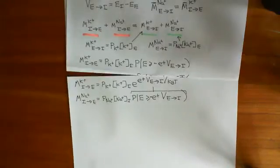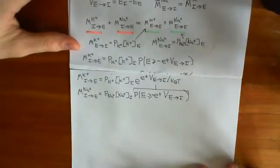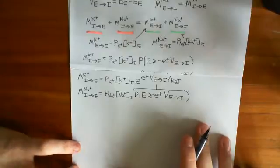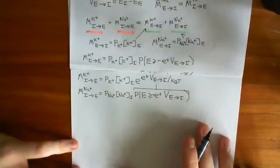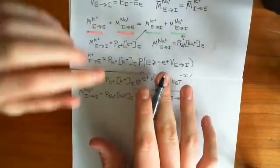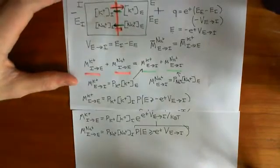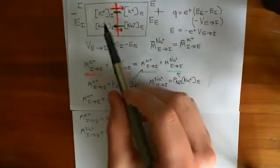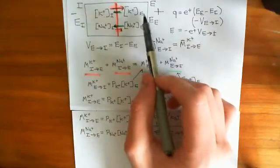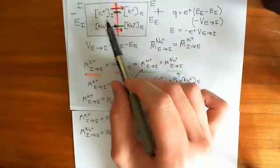Welcome to this fourth video on the resting membrane potential and the Goldman-Hodgkin-Katz constant field equation. We're in the process of deriving the Goldman-Hodgkin-Katz constant field equation. To do that, at equilibrium — at the resting membrane potential — the total movement of positive charge from the intracellular compartment to the extracellular compartment should equal the total movement of charge from the extracellular compartment to the intracellular compartment.